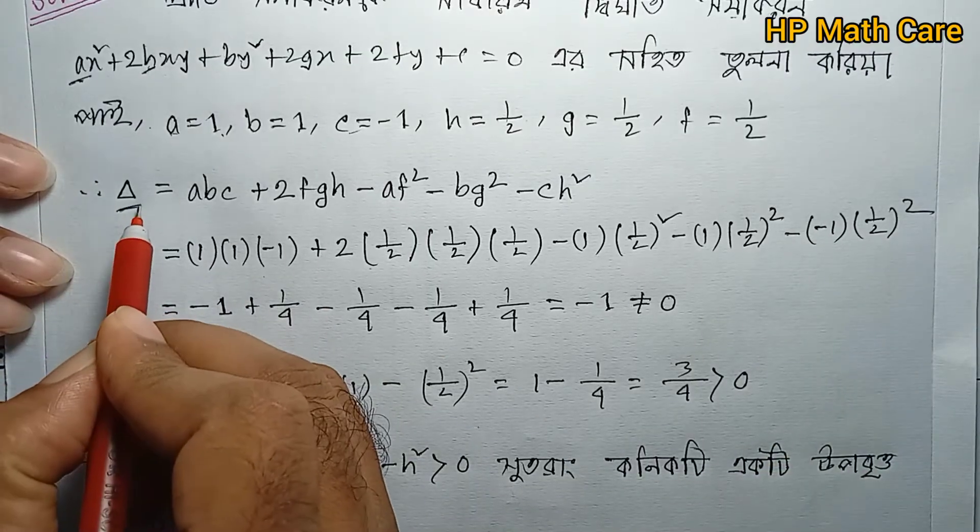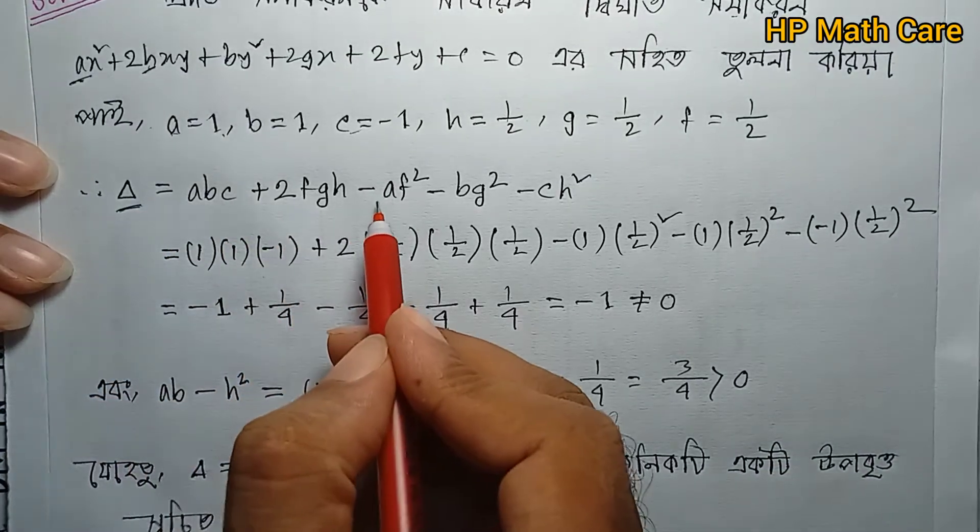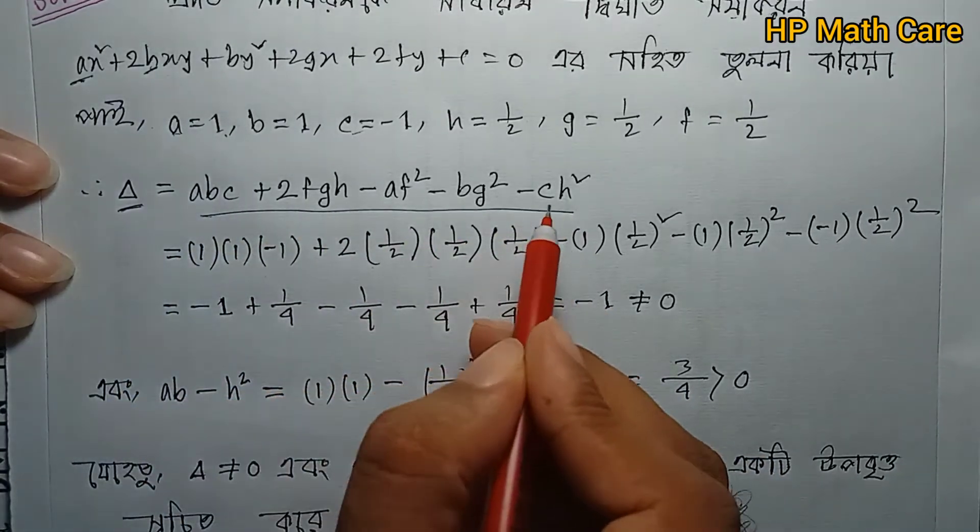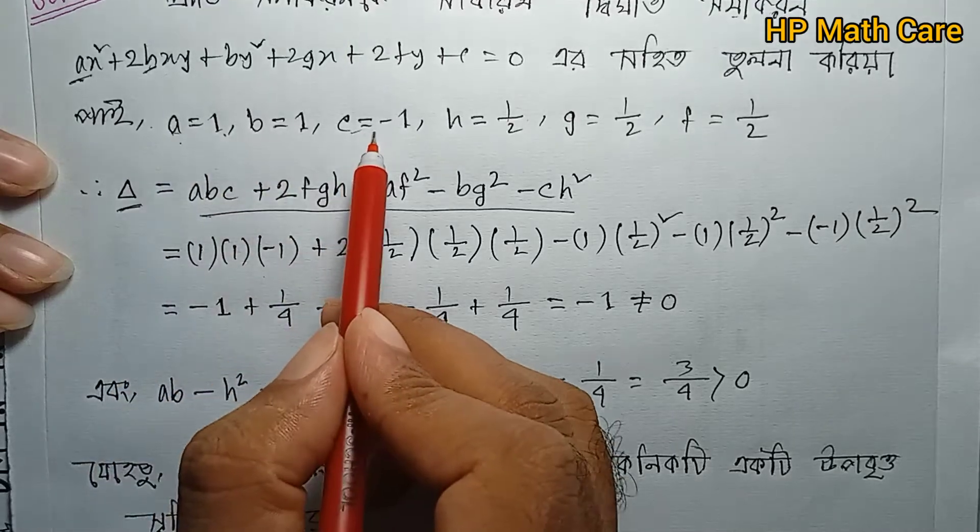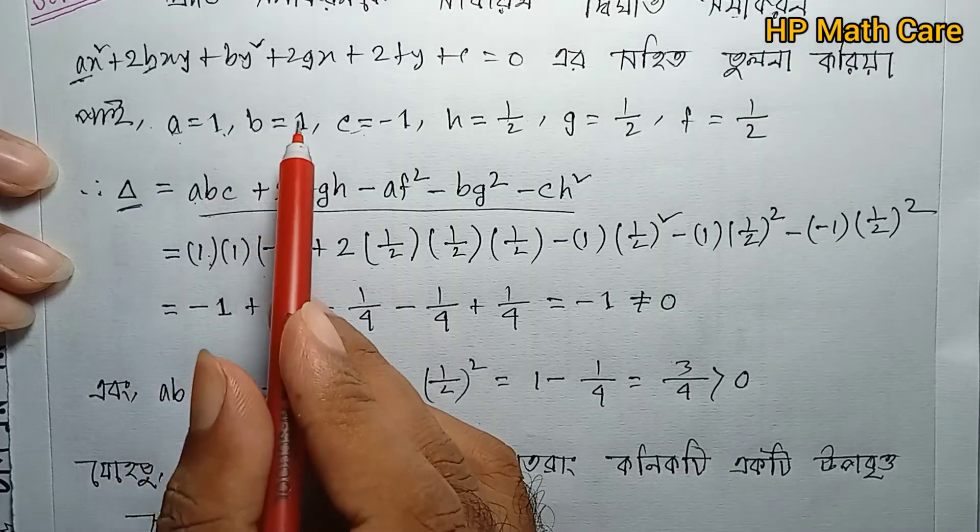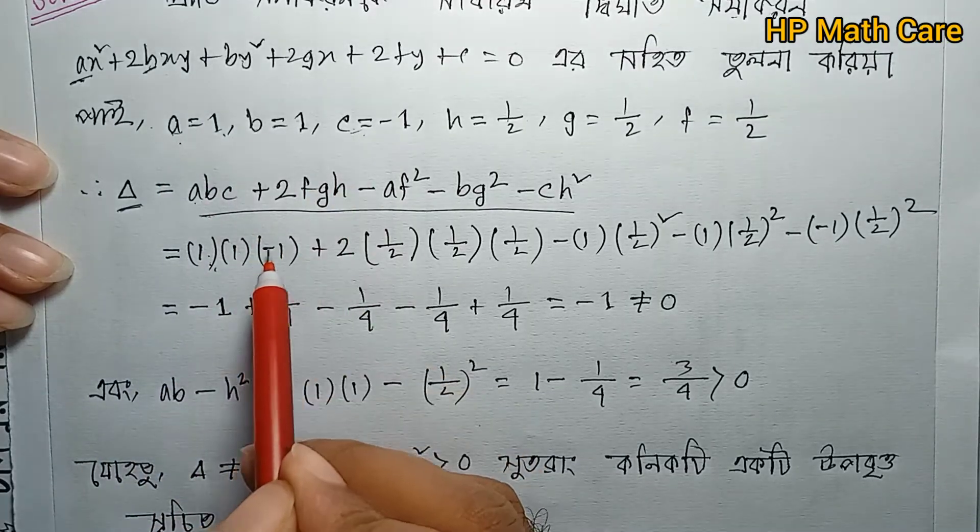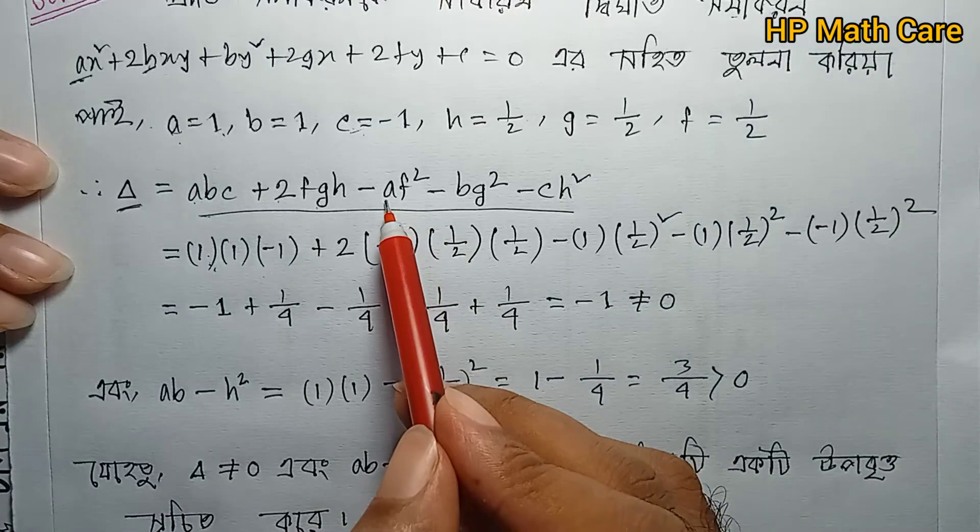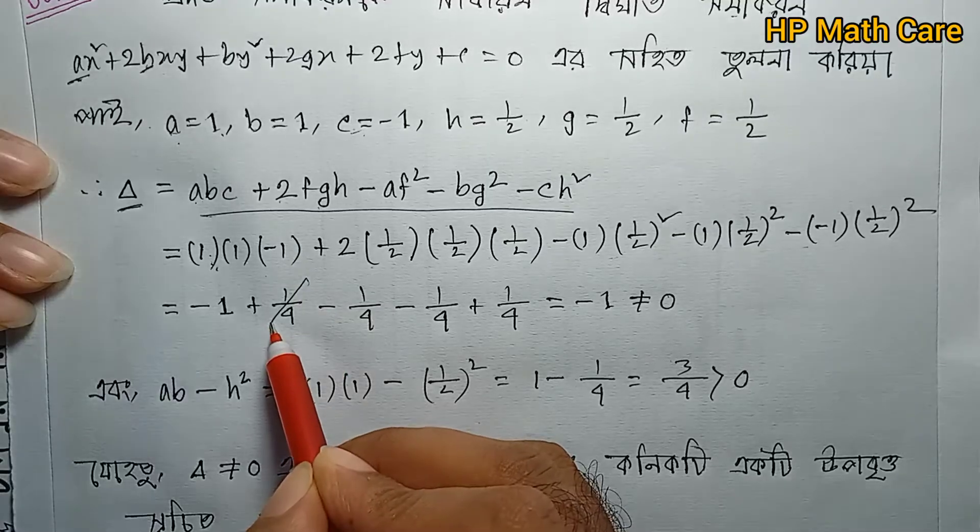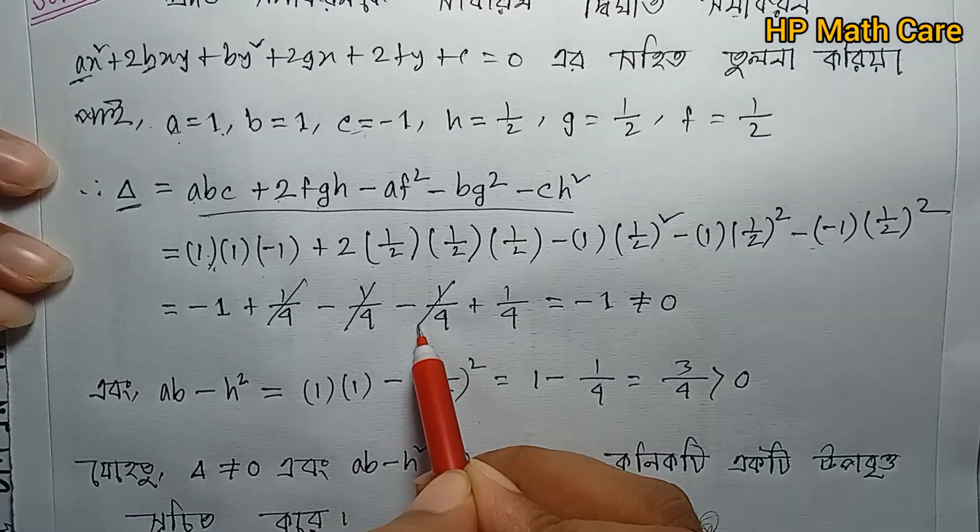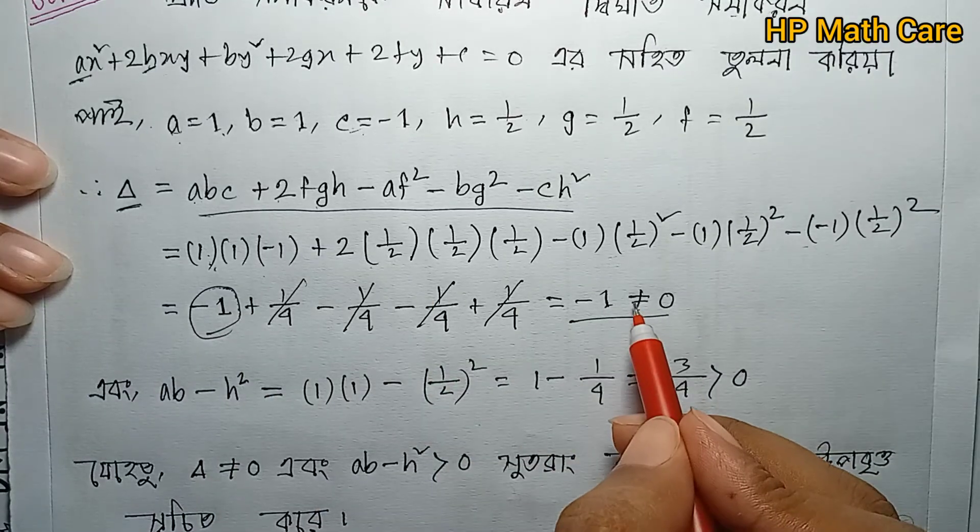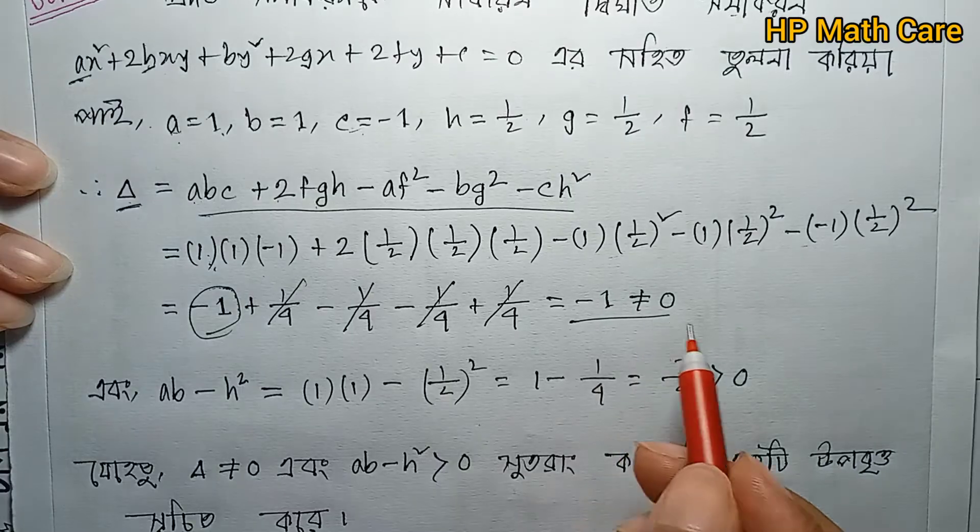Now calculate delta: Δ = abc + 2fgh - af² - bg² - ch². Substituting: Δ = (1)(1)(-1) + 2(1/2)(1/2)(1/2) - (1)(1/2)² - (1)(1/2)² - (-1)(1/2)².